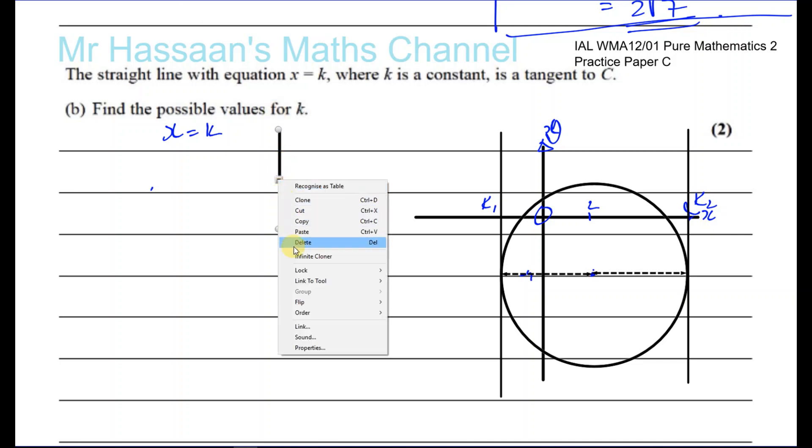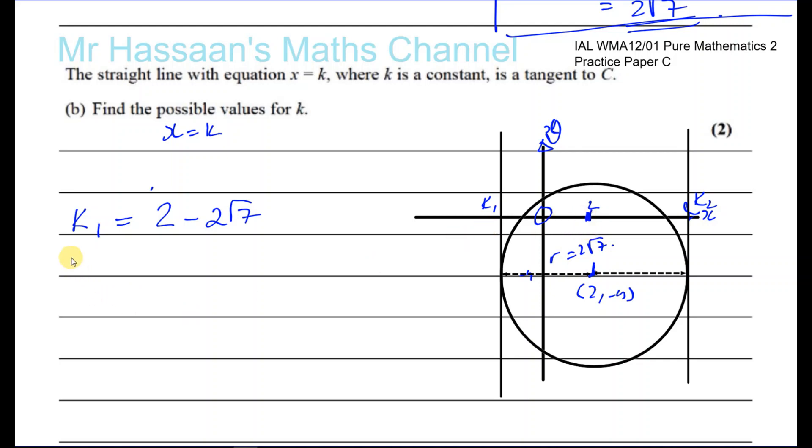We know that the center of the circle is 2 minus 4. The x value is 2, and I know that this length is the radius of the circle, and the radius was 2 times root 7. So we can say that the value of k1 is going to be 2 minus 2 root 7, 2 minus the radius. And the value of k2 is going to be 2 plus the radius, 2 plus 2 root 7. That's a really simple way of dealing with this question.